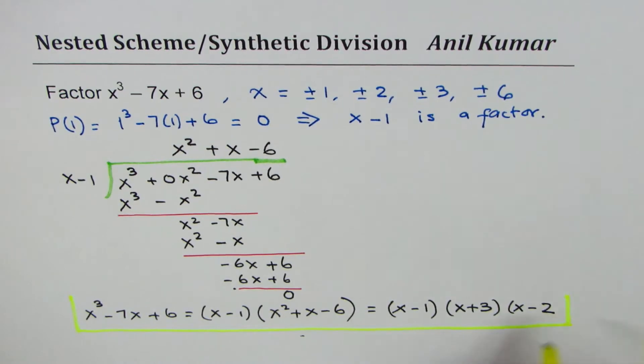So I could write this as x minus 1 times x plus 3 times x minus 2. So that becomes our equation in factored form.